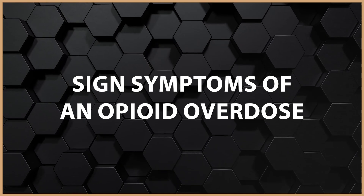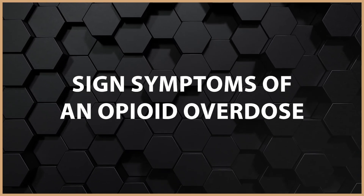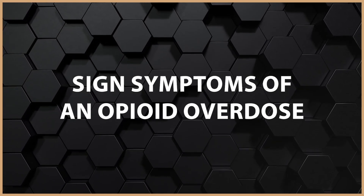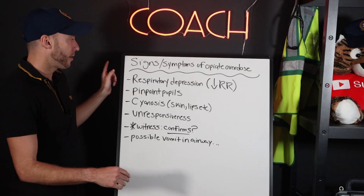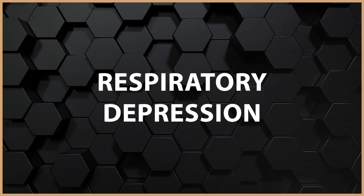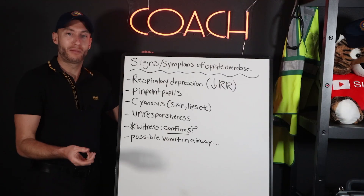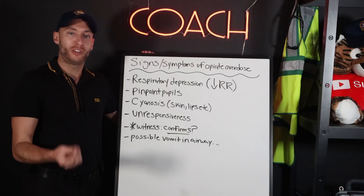Our clear-cut signs and symptoms of an opiate overdose we have to watch for. Respiratory depression — what that means in adult patients is a respiratory rate of under 12.